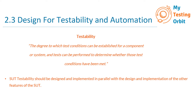SUT testability should be designed and implemented in parallel with the design and implementation of the other features of the SUT. So while you are designing and implementing the other features of the system, it's advisable that in parallel you also start looking into which areas of the system are testable and which are not, and for the ones which are not, whether there is anything you can do to make those testable — like adding a stub, a driver, a new design capability, or making some API calls — whatever it requires to make it testable. That needs to be looked into in parallel while the system is being designed and implemented, because it's easier to do that at that stage.